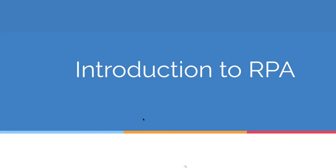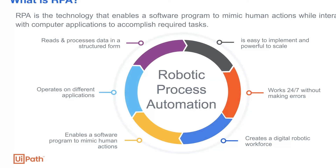So first, what is RPA? RPA is short for robotic process automation. This is basically a technology that can automate things. The key feature of RPA is that it has the ability to mimic human actions while it interacts with your computer applications.